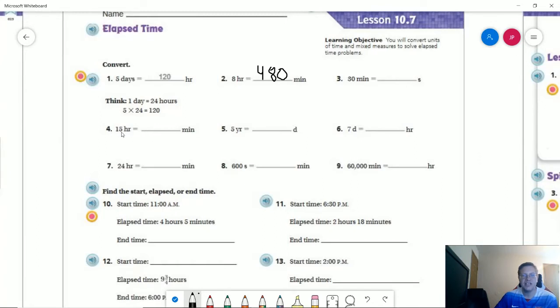The next one, 15 hours would be equal to 15 times 60. So 60 times 10 would give me 600, plus 300, which would be half of that, would give us 900 minutes.